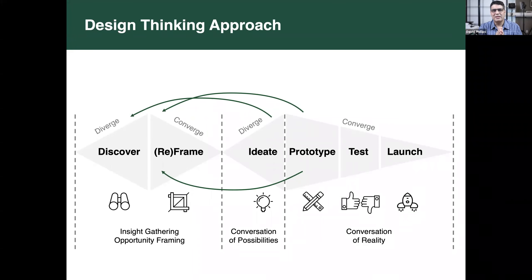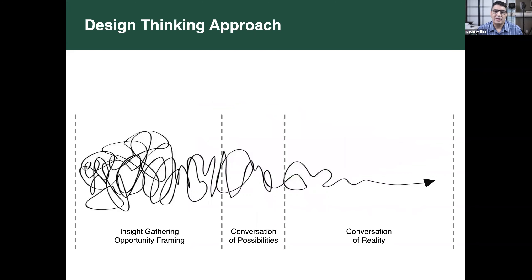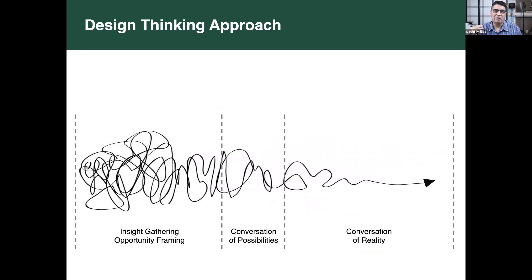One last visual to share: another way to look at design thinking is that it is about intentionally embracing ambiguity, chaos, and messiness at the beginning so that we can get to better solutions sooner — and sooner often means cheaper. We can get there faster, and it costs less time and money. With that, I'm going to turn it back to Margaret to talk about the School of Professional Studies.